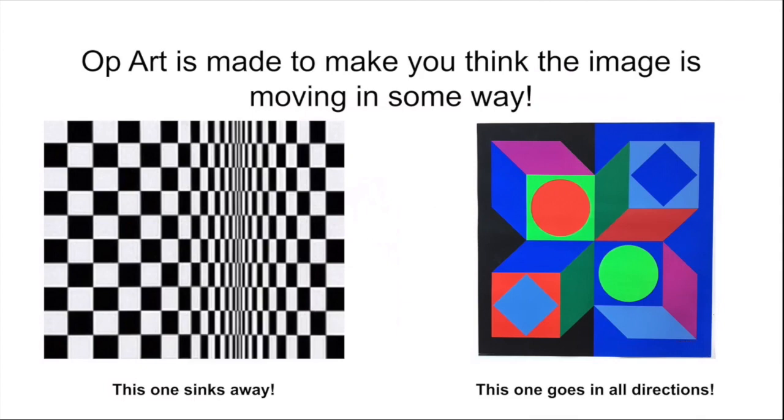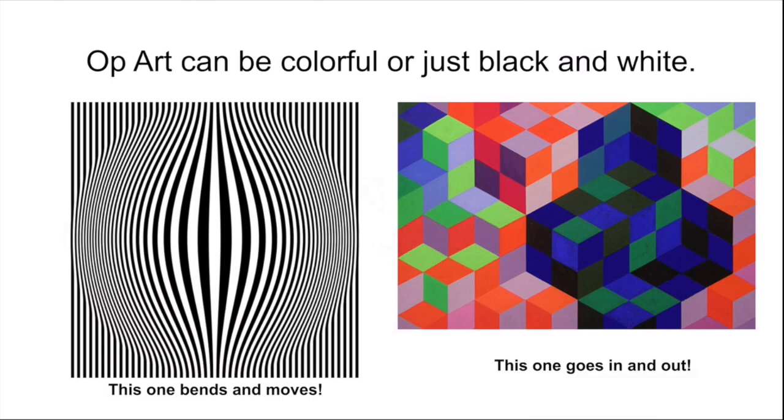Op art can be black and white, or it can be colorful. The black and white on the left really shows movement. It's a very simple idea, but it looks like something's bulging from underneath, like a ball is trying to poke through a piece of paper. And the one on the right feels like all those cubes are either upside down or right side up, they go in, they go out. You can't really tell what direction those cubes are going.